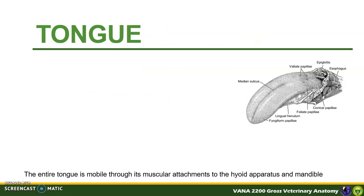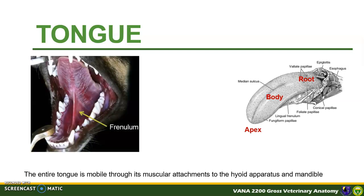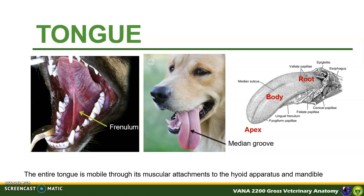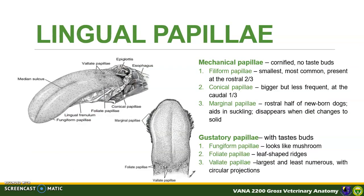The next structure present at the oral cavity is the tongue. Anatomically, this is divided into a free apex, a meaty body, and a caudal root. The entire tongue of dog is mobile through its muscular attachments to the hyoid apparatus and the mandible. The lingual frenulum is an unpaired median mucosal fold at the ventrum of the tongue, connecting it to the floor of the mouth. The dorsal surface is marked longitudinally by a median groove or the median sulcus and is covered with papillae. Papillae can be grouped either as mechanical papillae or gustatory papillae. Mechanical papillae are cornified and have no taste buds, while gustatory papillae are embedded with taste buds.